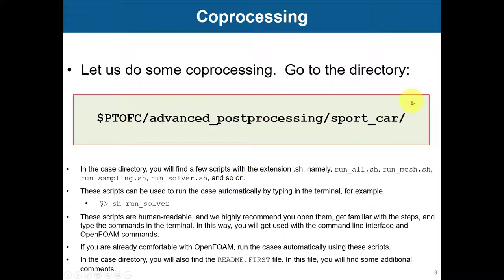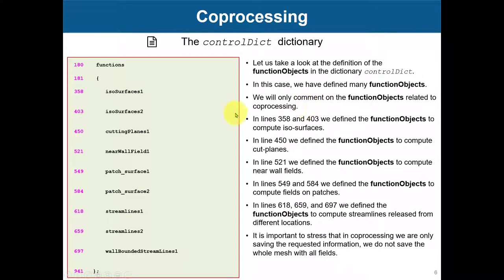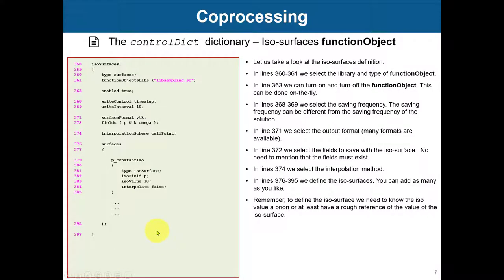In this directory you're going to find this case — you need to run it. We're going to run a few iterations. We have this geometry and we're going to do co-processing: compute some cut planes and streamlines, and not save the whole domain. Here you have some basic instructions. As you open the control dictionary, you're going to find many function objects: iso-surface, cut planes, near wall field, patch surface, streamlines, and wall-bounded streamlines.